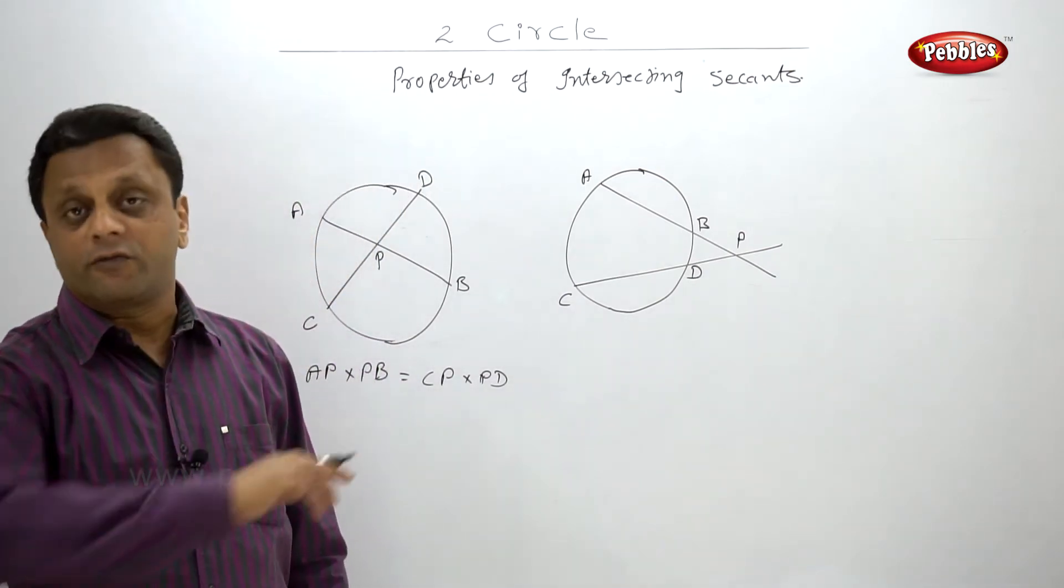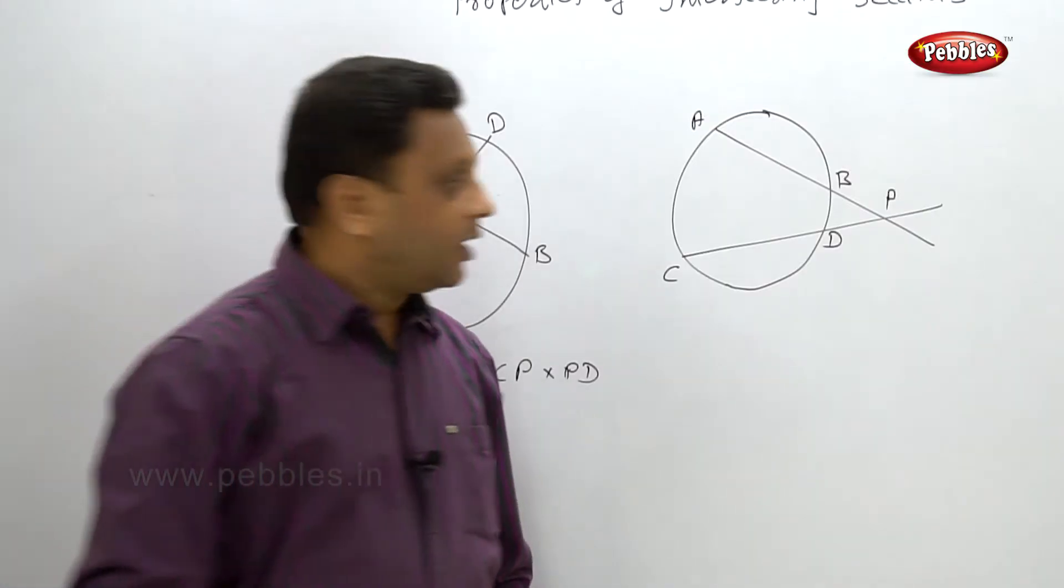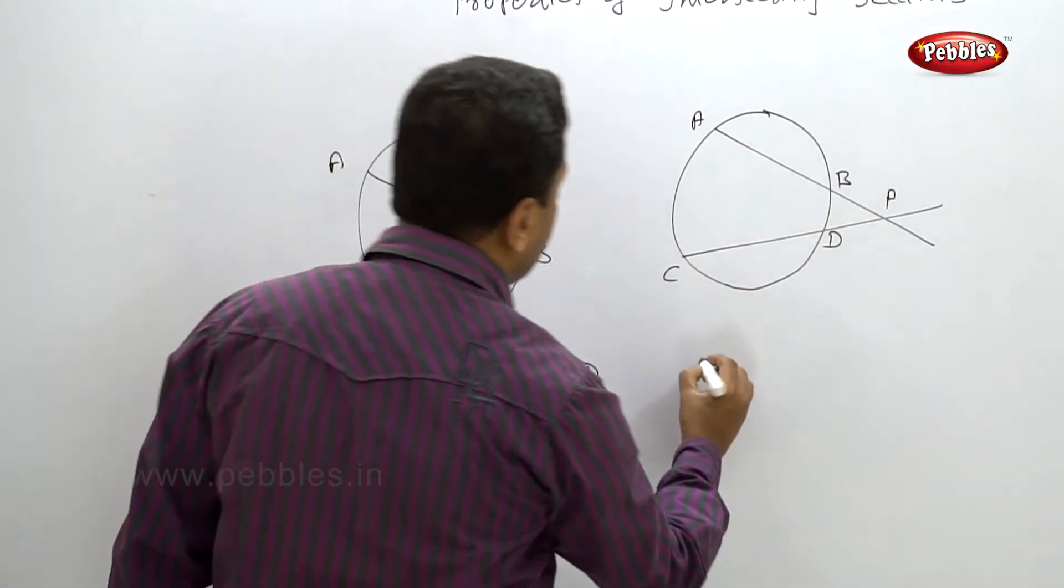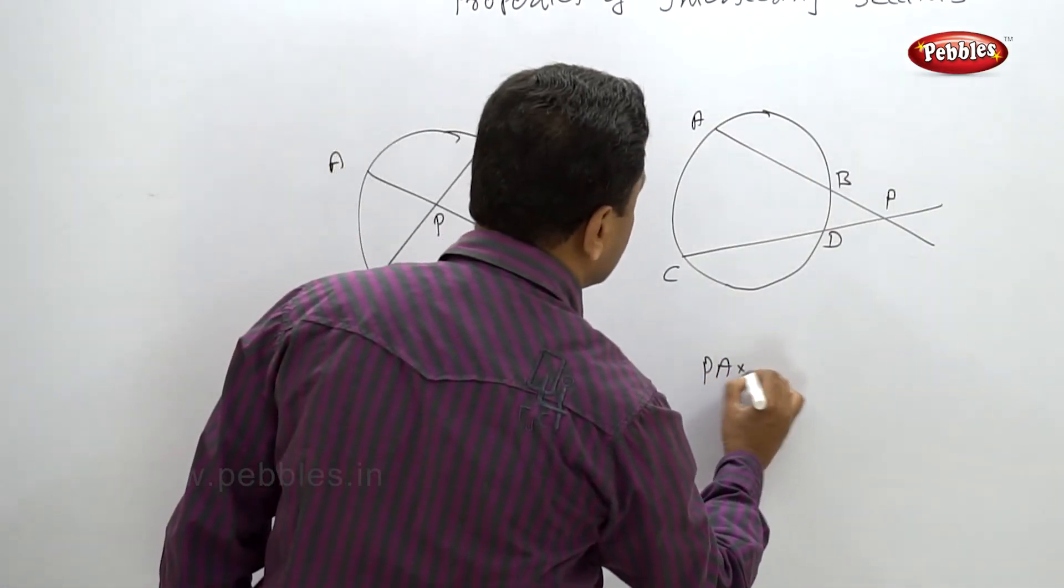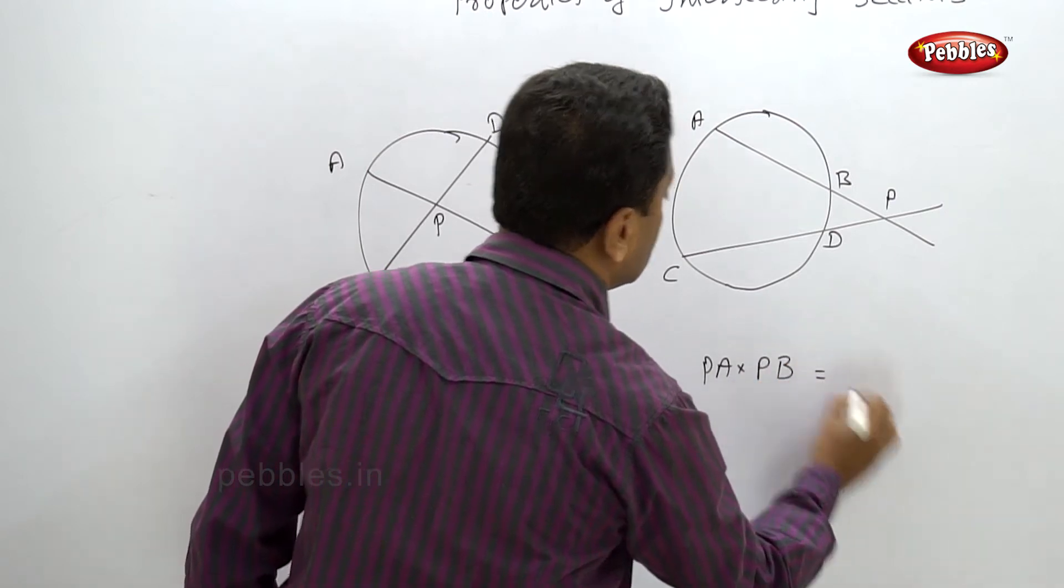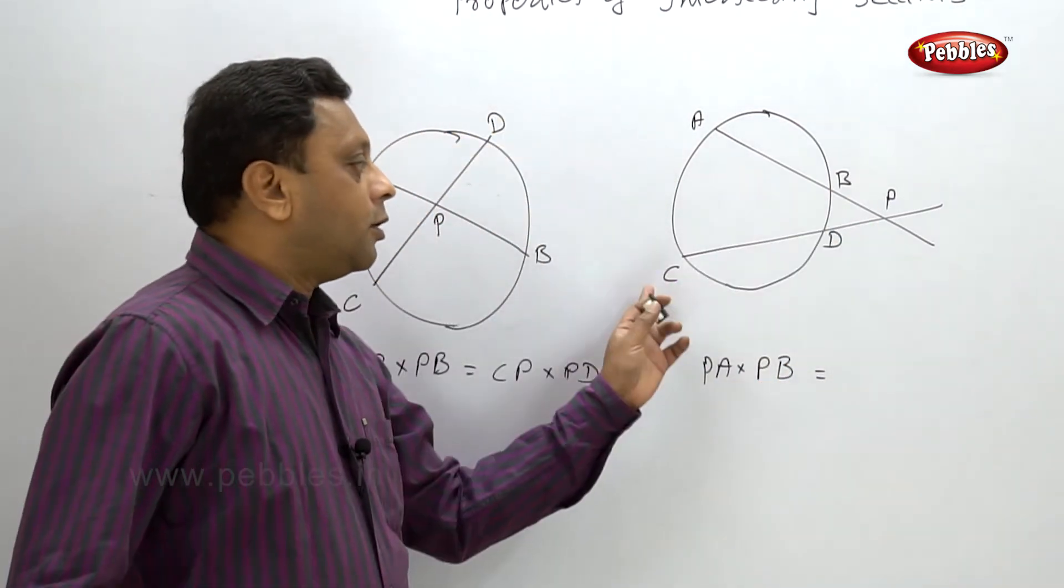Same thing - start from the point of intersection to each of the point on the secant intersection. So here it will be PA into PB is equal to PC into PD.